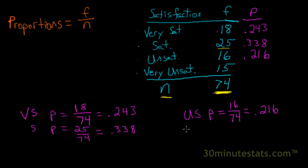And we could do the same thing one last time for the very unsatisfied group, and find that the proportion is 15 divided by 74, and that would give us a proportion of 0.203.